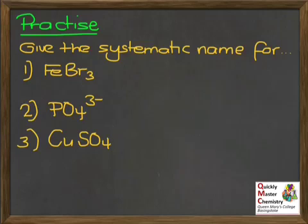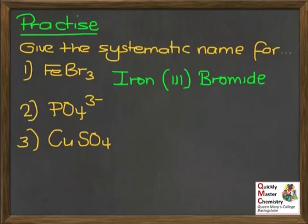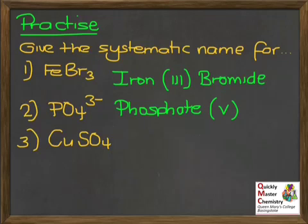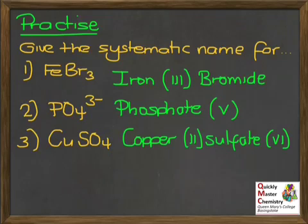The answers: for question number 1, you should have got iron(III) bromide. For question number 2, the phosphate ion — that'll be phosphate(V). And for question number 3, copper sulphate — both parts can have a Roman numeral, so it's copper(II) sulphate(VI).